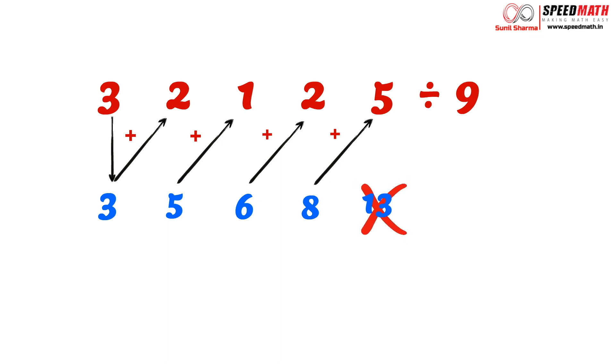So whenever you get the remainder greater than the divisor, what we do is we remove 9 from that and we add 1 to the last digit of the quotient. So here we are going to subtract 9 from 13, and at the same time we are going to add 1 to the last digit of the quotient. So 13 minus 9 will give you 4, so the remainder is 4. That is very clear.